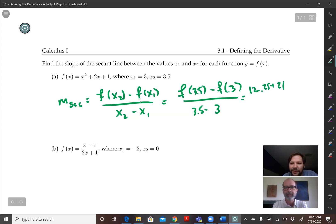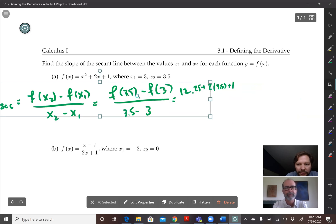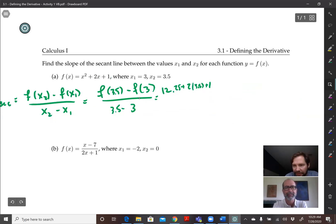12.25 plus 2 times 3.5, which would be 7, plus 1, minus—and this is where I need the tablet to keep these things on the screen. So that whole quantity minus f(3), which would be 9 plus 2 times 3 is 6 plus 1, and then again on the bottom we have 3.5 minus 3.